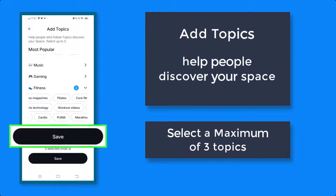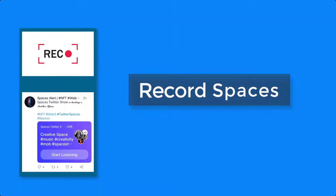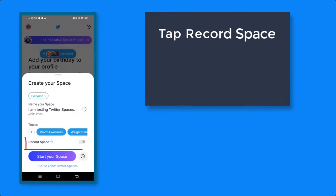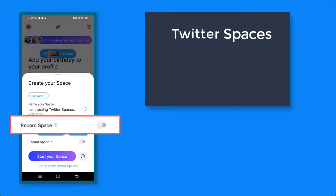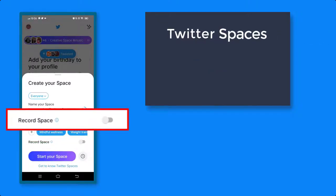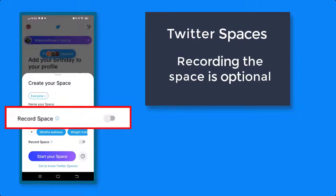Once you're done, click Save. You can also record the space — just tap on this option and the entire audio streaming will be recorded. When creating a Twitter Space, you have the option to choose to record or not to record the audio streaming.